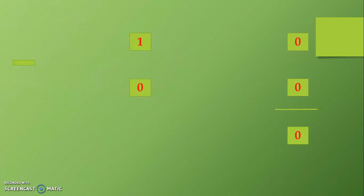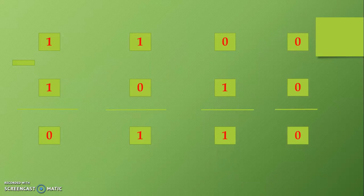Let us understand binary subtraction — then it will be very easy to prepare a truth table. We have two binary bits. Zero minus zero: the difference is zero and there is no borrow. One minus zero: difference is one, borrow is zero. One minus one: difference is zero, borrow is also zero. But the last condition, zero minus one: difference is one and borrow is one. This last condition, zero minus one, is very important in case of binary subtraction.